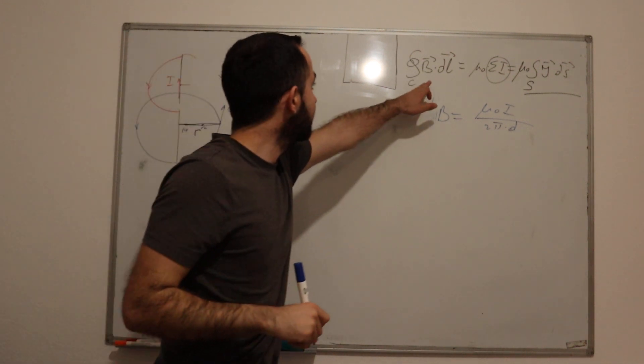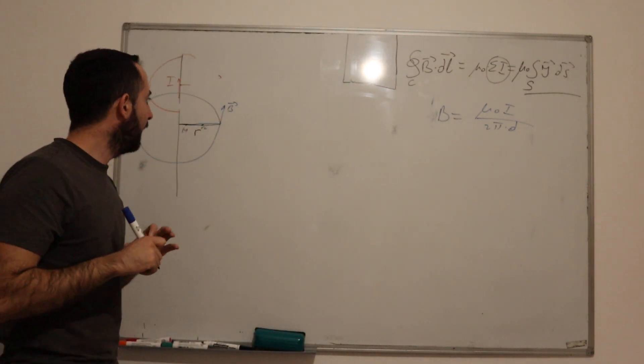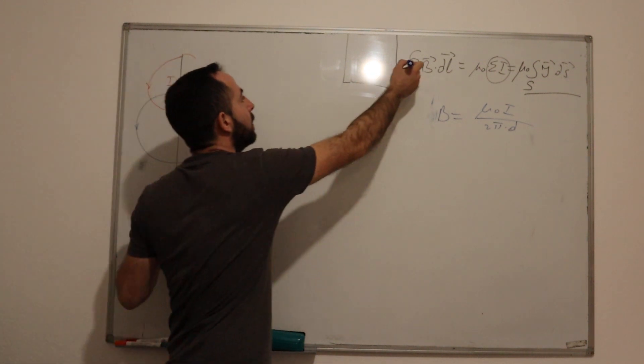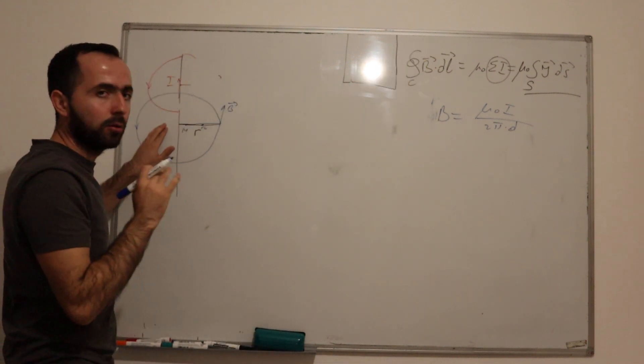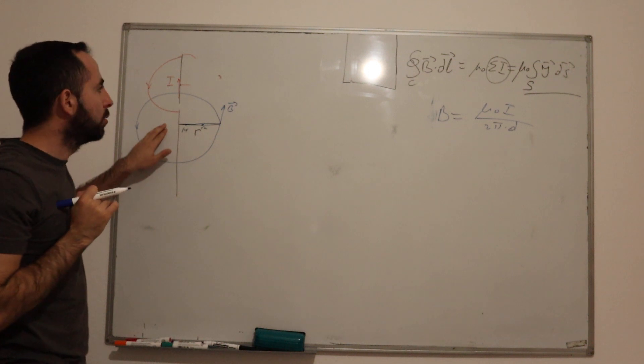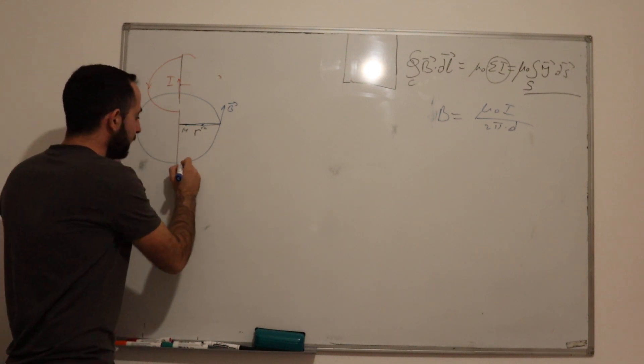Now, what is this dL? This is our contour, integral of a complete closed contour. dL is an infinitely small part of that contour.